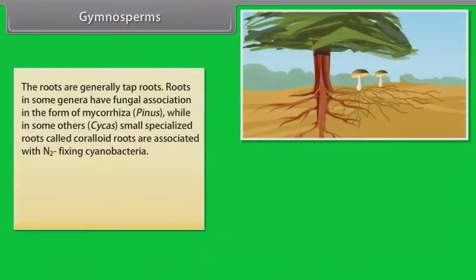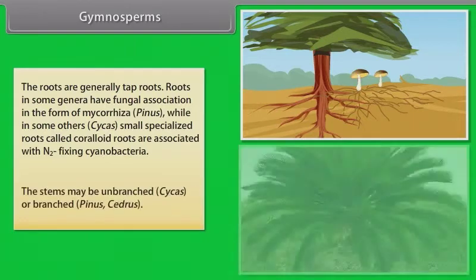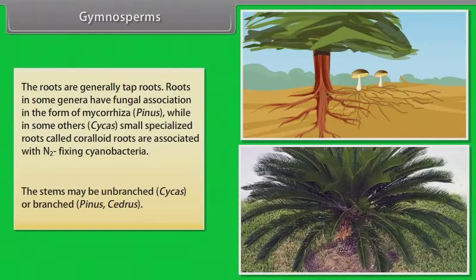The roots are generally tap roots. Roots in some genera have fungal association in the form of mycorrhiza, as in Pinus. While in some others, like Cycas, small specialized roots called coraloid roots are associated with N2-fixing cyanobacteria. The stems may be unbranched, as in Cycas, or branched, as in Pinus and Cedrus.